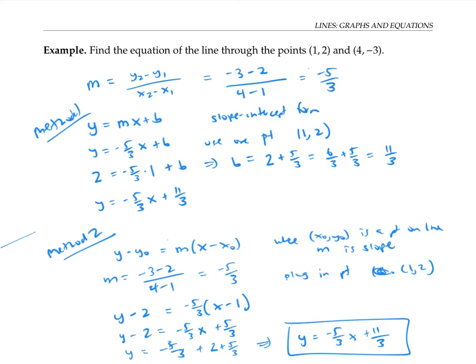So we've seen two ways of finding the equation for the line, using the slope intercept form, and using the point slope form.